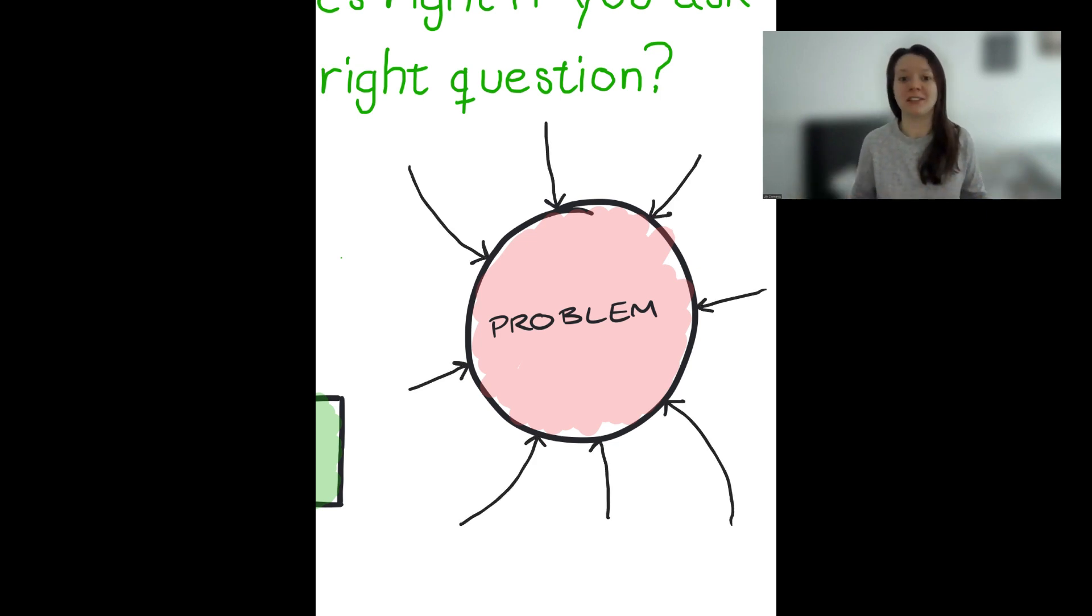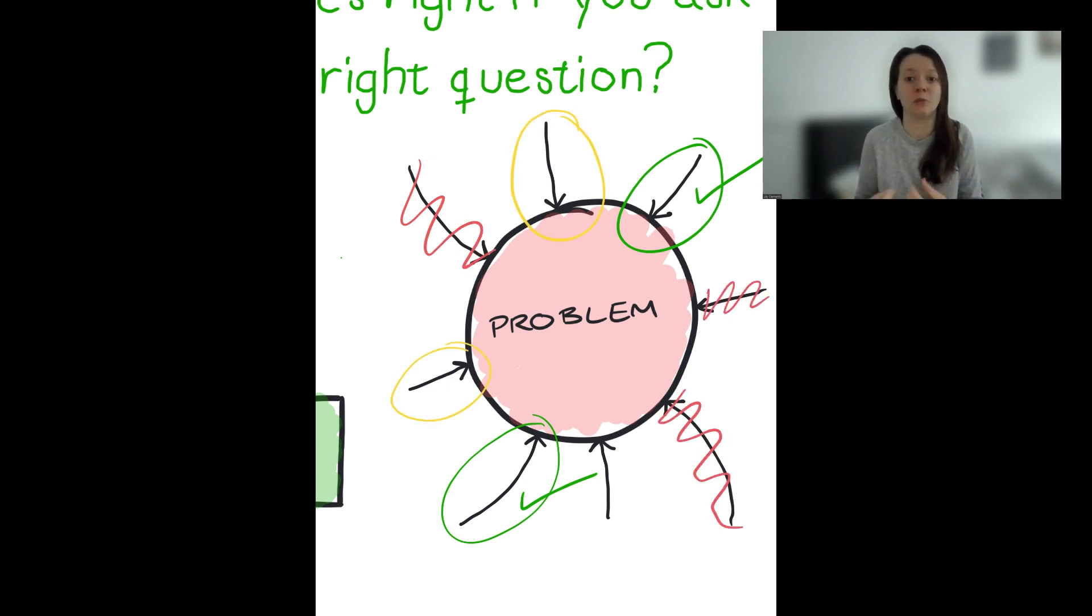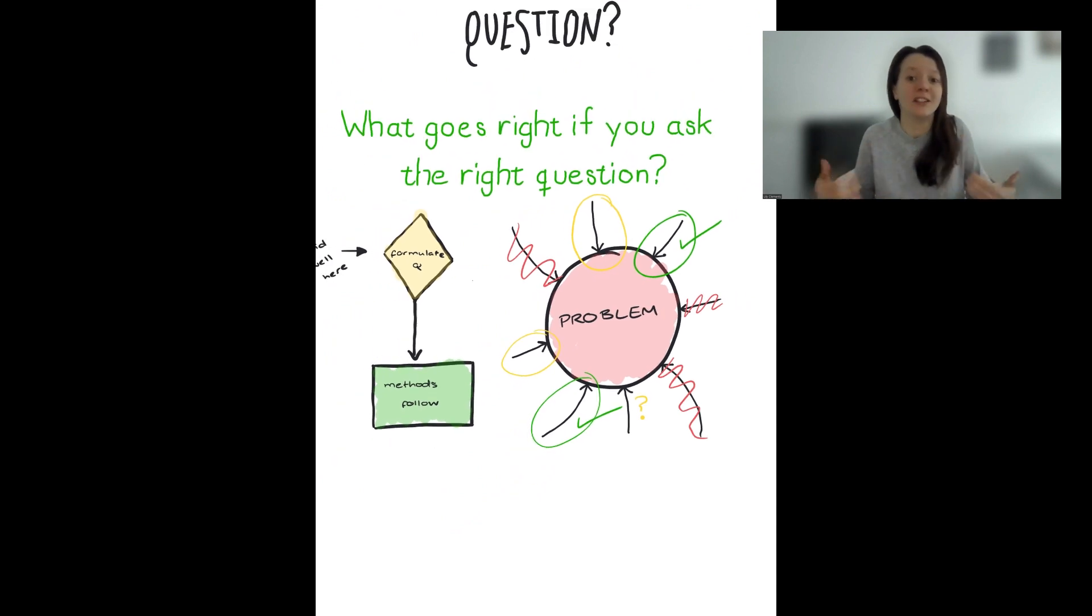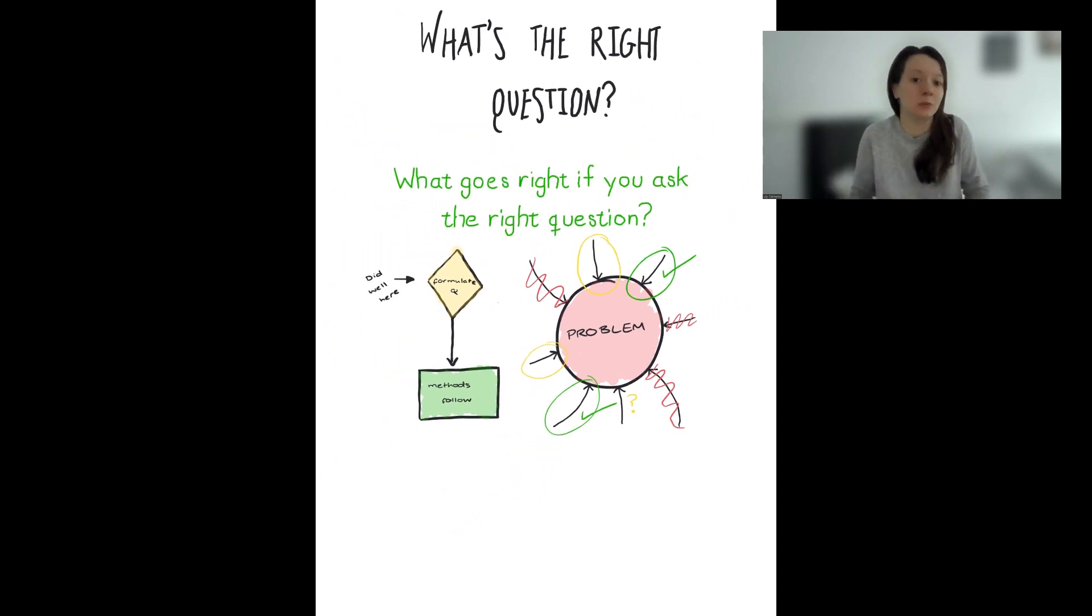And the protein folding example is such a powerful instance, whereby clearly defining a question which was of importance and asking the right question for what was needed, you can then see which methods are able to add value and are able to move us forward related to this question.